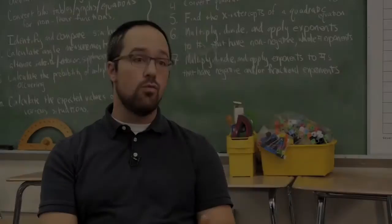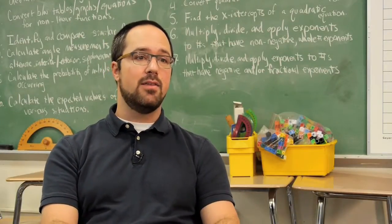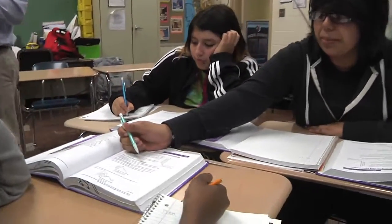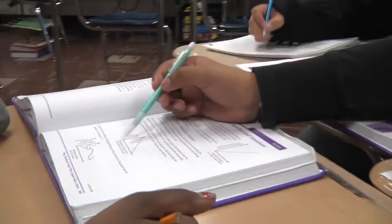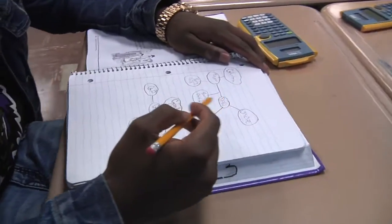The second Common Core practice standard, reason abstractly and quantitatively, is a huge part of what IMP is because it doesn't often give them the abstract and the quantitative right away. They don't drink the same amount, pounds of coffee, because every day they drink a different amount. It often gives them a context and the kids have to work it up that ladder of abstraction.